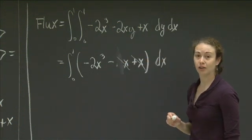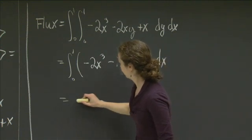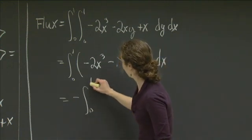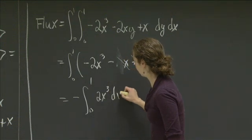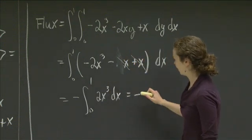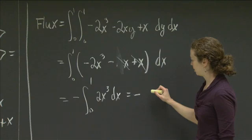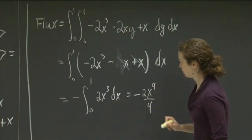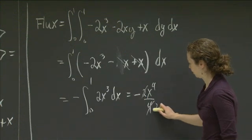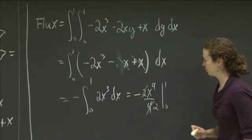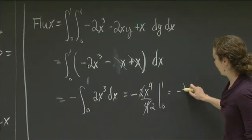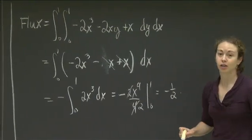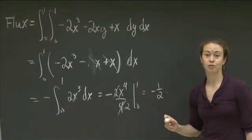So those subtract off. And I'm left with minus the integral from 0 to 1 of 2x cubed dx. Well, that's going to be minus of x cubed. It's going to be x to the fourth over 4. And then I have the 2 still here. So that will divide out. Evaluate at 0 and 1. At 0, I obviously get nothing. At 1, I get negative 1 half. And so the flux of F across the surface is equal to negative 1 half.